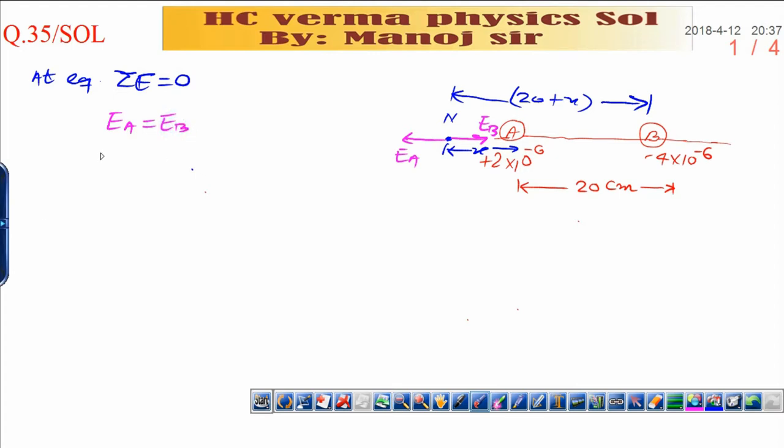Now put the value of EA. EA is 9×10⁹×2×10⁻⁶ divided by x² is equal to EB is 9×10⁹×4×10⁻⁶ divided by (20 + x)².